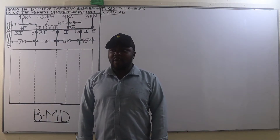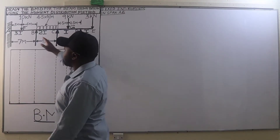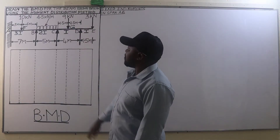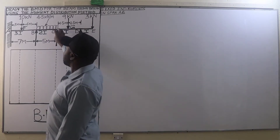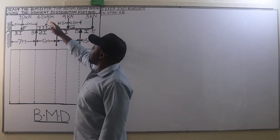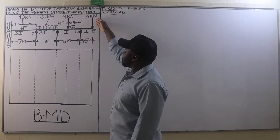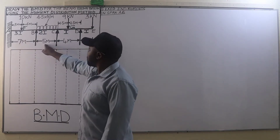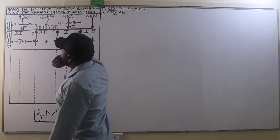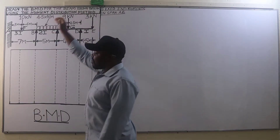Hello guys, welcome back to our channel. In today's lesson, we are going to analyze a beam that is fixed at end A and supported at B, C, D on member DE. It is overhanging. The loads subjected on this beam: point load at F of 10 kN, UDL between B and C of 4.5 kN per meter, point load at G of 9 kN, and point load on the overhanging end of 3 kN. The spans: AB 7 meters, BC 5 meters, CD 4 meters, DE 1.5 meters. We are required to plot the bending moment diagram using the moment distribution method.